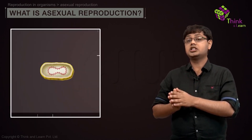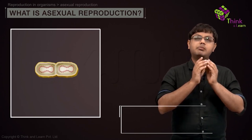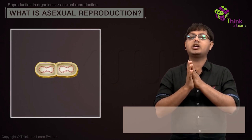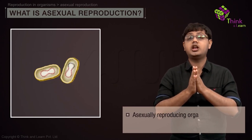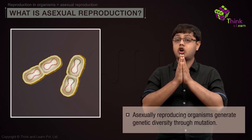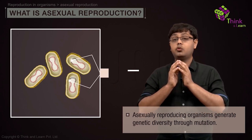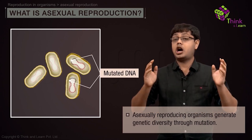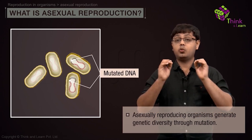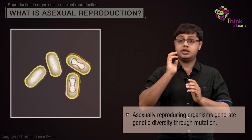So even organisms that reproduce asexually must have some mechanism for generating genetic diversity, commonly through mutation. What it is, how it is done, when — all of this is for a different discussion.